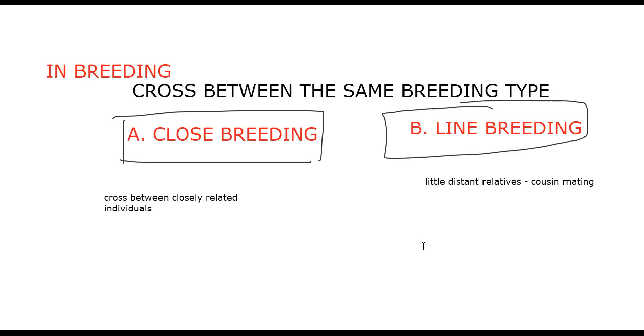Outbreeding includes outcrossing and crossbreeding. In outcrossing, animals are of the same breeding type but have no relation to each other. In crossbreeding, the cross is between two different breeds.